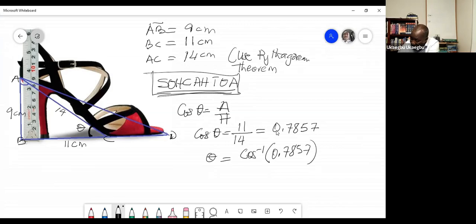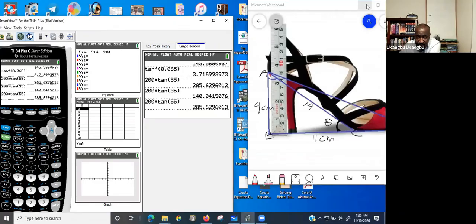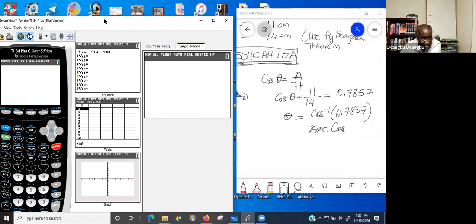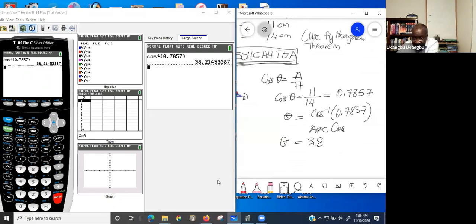So let me pull up my calculator. Okay, so we can punch in the number here. We can clear the screen and then we need arc cosine. So you come to second function, you press your cosine, you type in the number 0.7857, you close it, you hit enter. That gives us what? The angle made is 38 degrees.